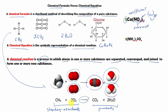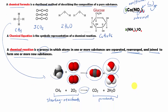The reactant, or starting material, will undergo a chemical reaction to produce the product, or the end result. In the process, atoms in the reactant are separated, rearranged, and joined to form one or more new substances called the product. To summarize: a chemical equation describes the process using an arrow that separates the reactant from the product, while a chemical formula describes a specific pure substance.